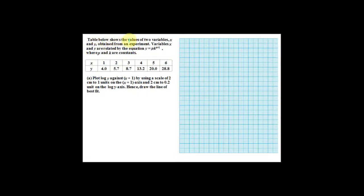The table below shows the value of two variables x and y obtained from an experiment. Variable x and y are related by the equation y equal to p times k to the power of x plus 1, where p and k are constants. This is the value of x and y on the table.